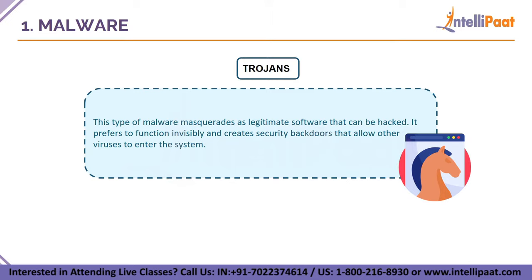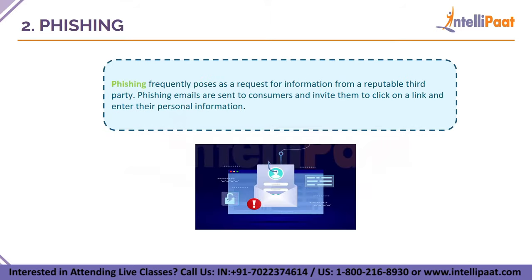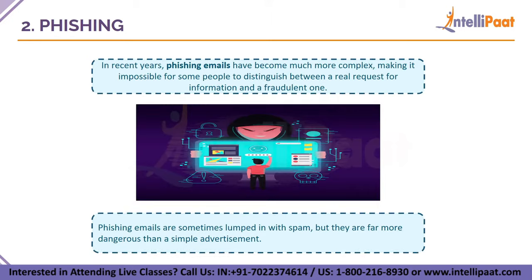The next type of cyber attack is phishing. Phishing frequently disguises itself as a request for information from a trustworthy third party. Consumers are sent phishing emails in which they are invited to click on a link and enter their personal information. Phishing emails have become more complex in recent years, making it difficult to distinguish between a legitimate request and a fraudulent one. Although sometimes confused with spam, phishing emails are far more dangerous. This type of attack involves hackers sending malicious emails, attachments, or URLs to users to gain access to their accounts.